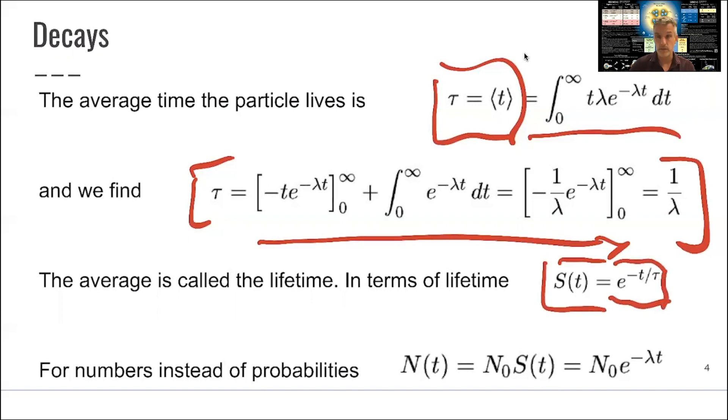If we now express this probability for the particle to survive until some time t through the lifetime, we find this is equal to e to minus t over the lifetime of the particle. You might want to look at an ensemble of particles and the time dependence of the number of particles which survived. This is given by this exponential.